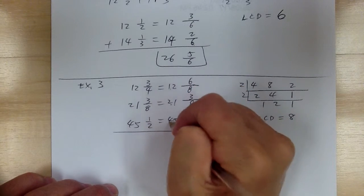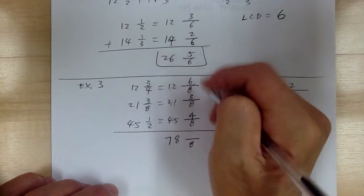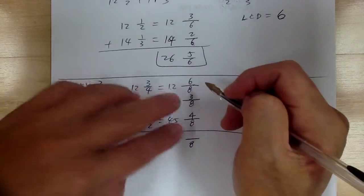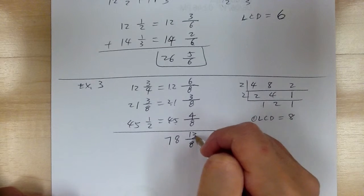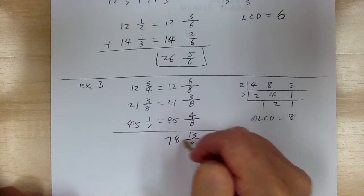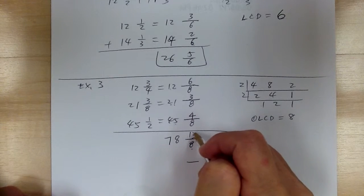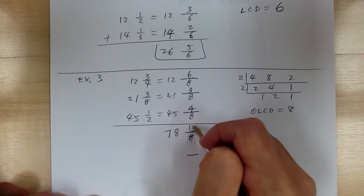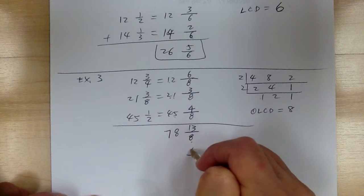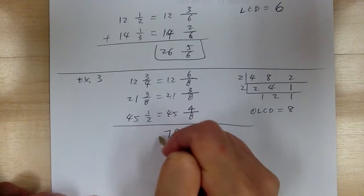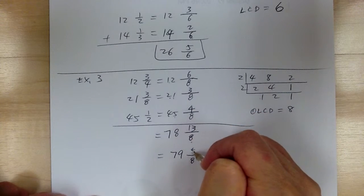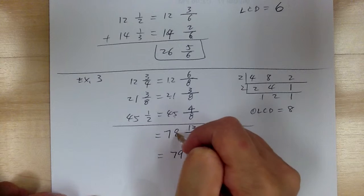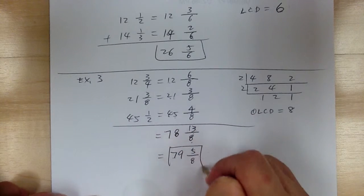For the fractions: 1 plus 2 is 3, plus 4 is 7. And for the numerators: 6 plus 4 is 10, plus 3 is 13. Since 13 over 8 is more than 1, 8 eighths makes a 1. So 13 over 8 equals 1 and 5 eighths. The 1 carries over, so the whole number becomes 79, giving a final answer of 79 and 5 eighths.